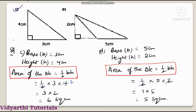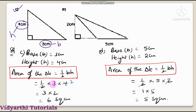Observe the next figure, figure C. Base is 3 centimetres and height is 4 centimetres. Area of the triangle = ½ × 3 × 4 = ½ × 12 = 6 square centimetres.